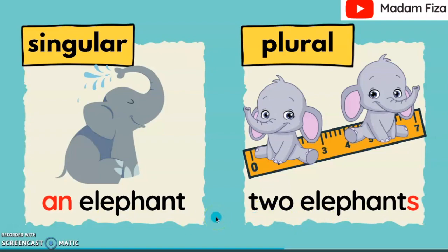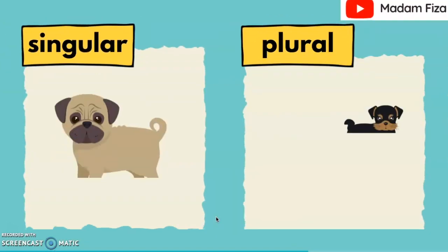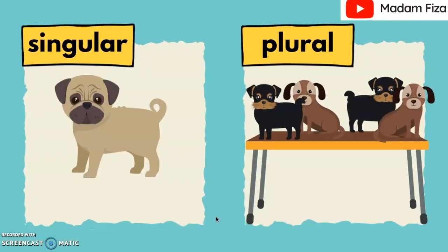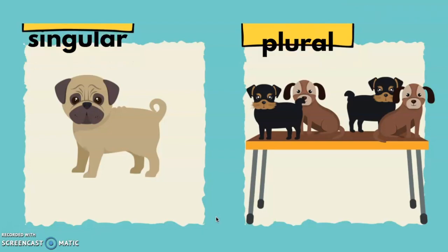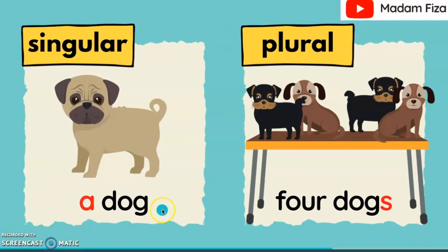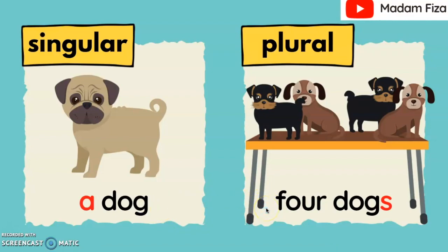Very good. Now it's your turn. What animal is this? Yes, dog. How many dogs have we got here? Can you guess the answers for singular and plural? The answer is... A dog is singular. Four dogs are plural.